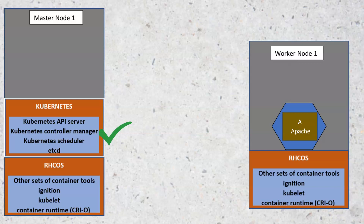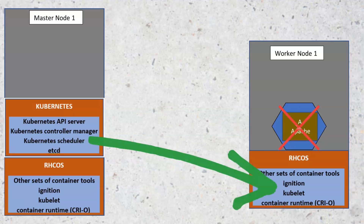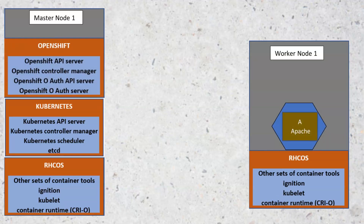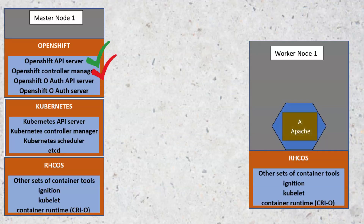If the cluster is not in its desired state, the controller manager uses the API to enforce the desired state. For example, if a pod dies, the controller manager signals the scheduler for the pod to be rescheduled and recreated, then the scheduler signals the kubelet to recreate and start the pod. On top of Kubernetes we also have the OpenShift layer, which consists of the OpenShift API server, the OpenShift controller manager, the OpenShift OAuth API server, and the OpenShift OAuth server.